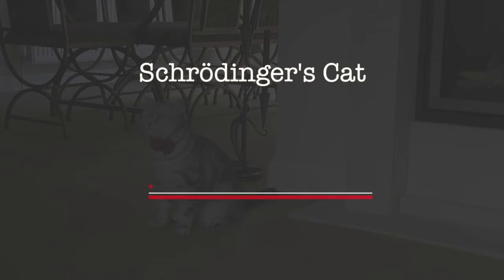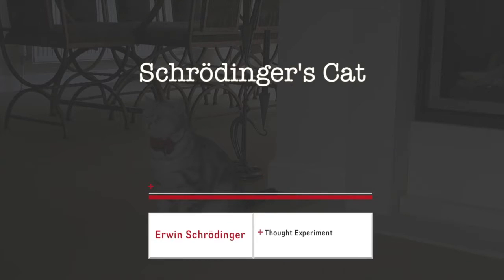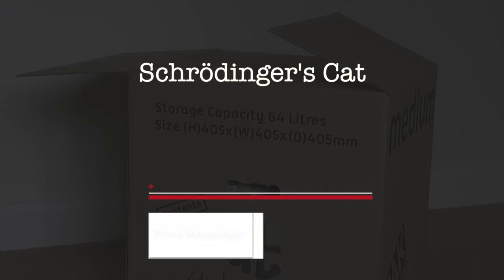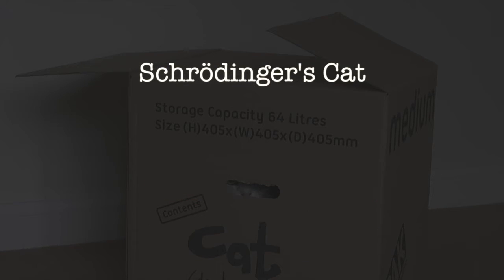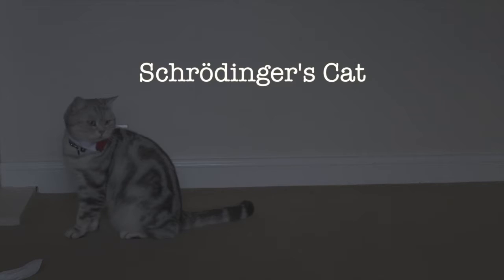Schrödinger's cat is a thought experiment first masterminded by the Austrian scientist Erwin Schrödinger in 1935. It involves putting a cat in a box and imagining whether it's dead or alive. However, when most people think of this famous thought experiment, they think of this.